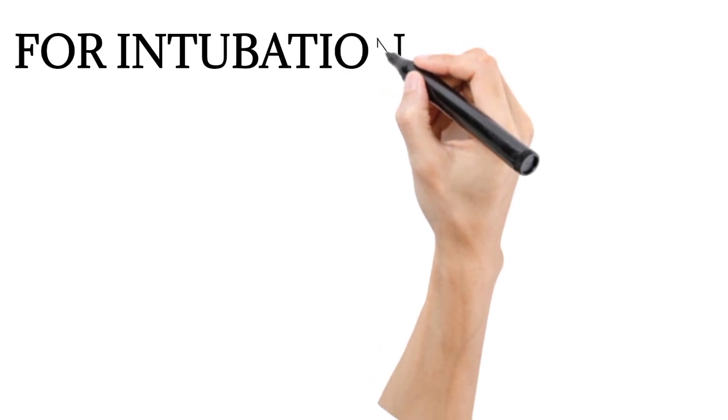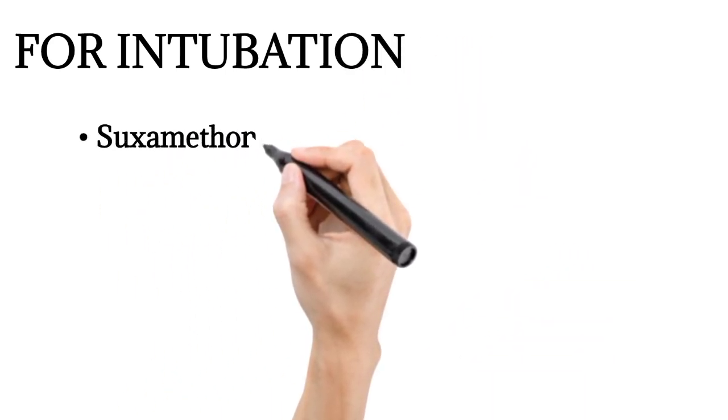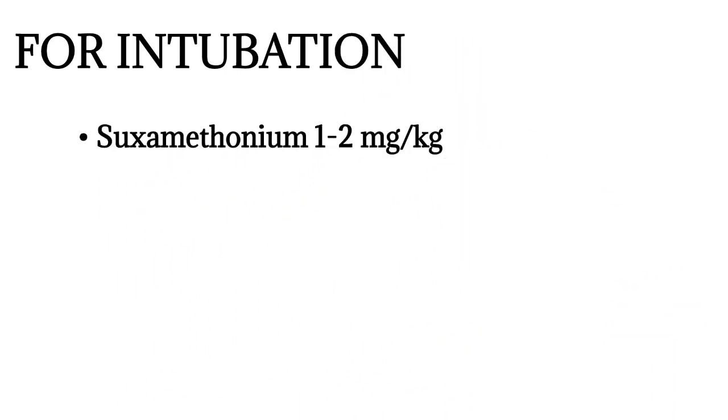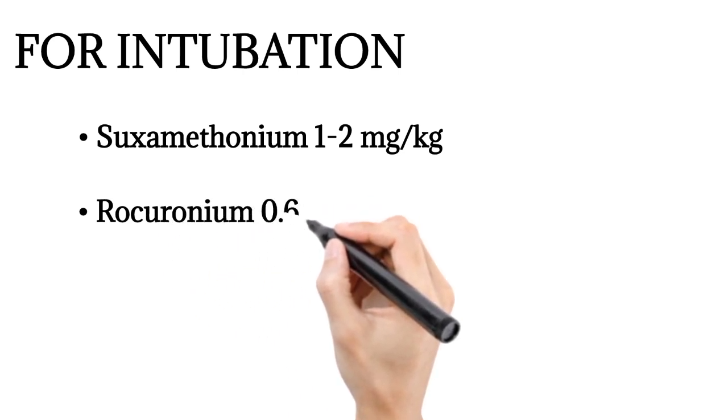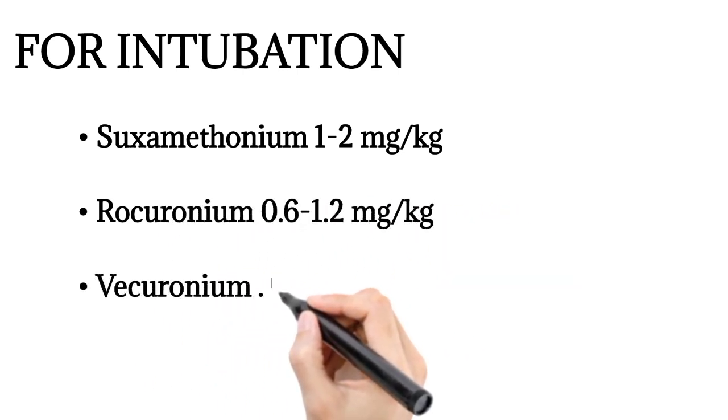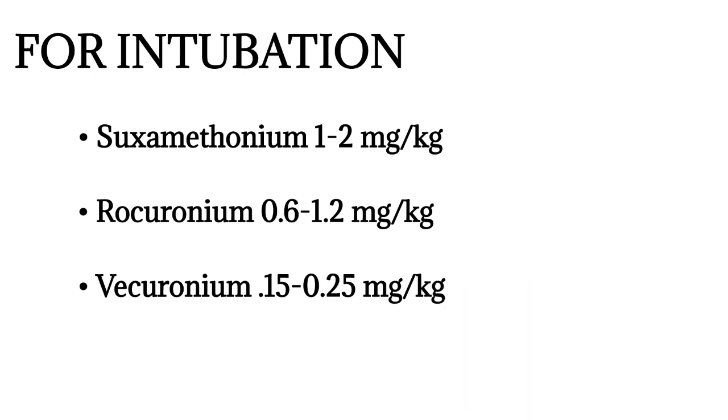For intubation: Suxamethonium 1-2 mg per kg, rocuronium 0.6-1.2 mg per kg, and vecuronium 0.15-0.25 mg per kg.